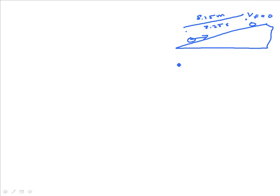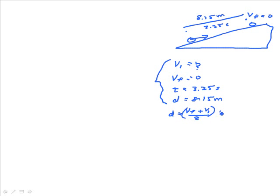So we know lots of information. Initial velocity is unknown. Final velocity is zero. Time of flight or time of travel is 3.25 seconds. And the displacement during that time is 8.15 meters. And so using our four kinematic expressions, we look for an equation or formula that does not have what? Well, it doesn't have a. And that, of course, is d is equal to vf plus vi over 2 times t. And we have to solve for vi.